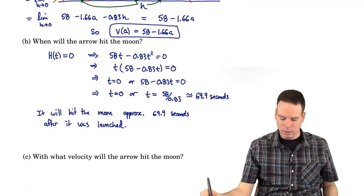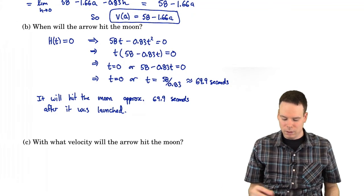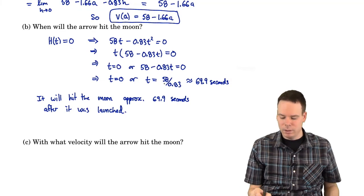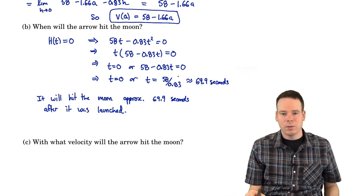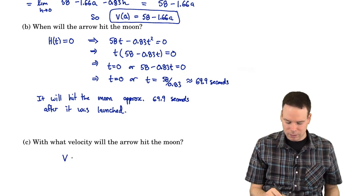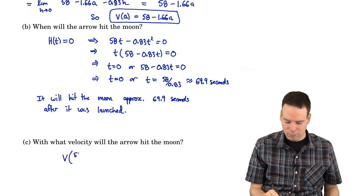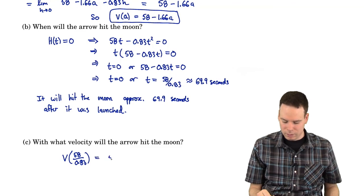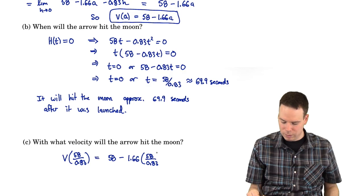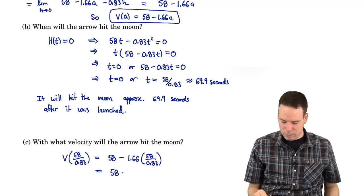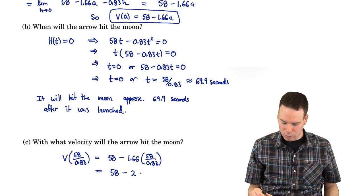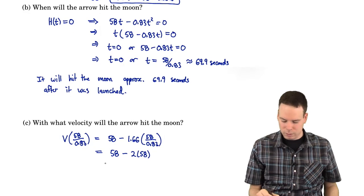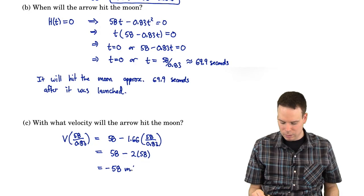What's the next question? With what velocity will the arrow hit the moon? Well we know when it will hit the moon. I wrote the approximation here 69.9 but there's the exact value 58 over 0.83. At time 58 over 0.83. That's when it hits the moon. I want to know what the velocity is at that time. I have a formula for velocity. So I just need to work out v at 58 over 0.83. And so that's 58 minus 1.66 times 58 over 0.83. That's 58 minus, remember 0.83 times 2 is the 1.66. So this is really 2 times 58. And so the resulting velocity is negative 58 meters per second.